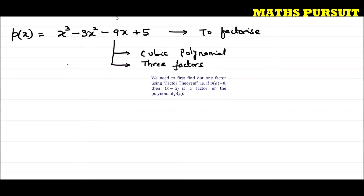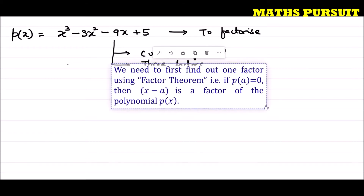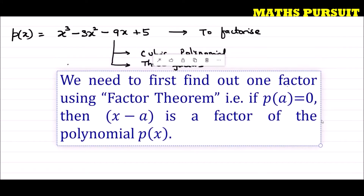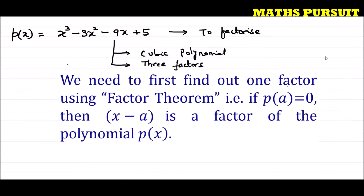We are going to first find out one factor, and after finding that one factor we can find out the other two. We need to first find out one factor using the factor theorem: if p(a) equals 0, then x minus a is a factor of the polynomial p(x).